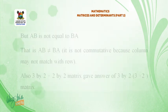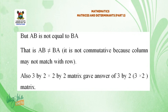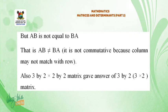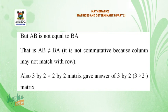Hence, AB is not equal to BA. That is, AB is not commutative, because the columns may not match with the rows. Also, a 3×2 times 2×2 matrix gives an answer of a 3×2 matrix.